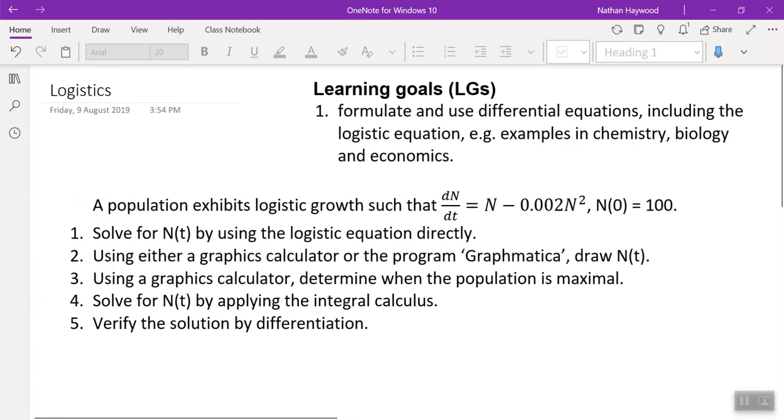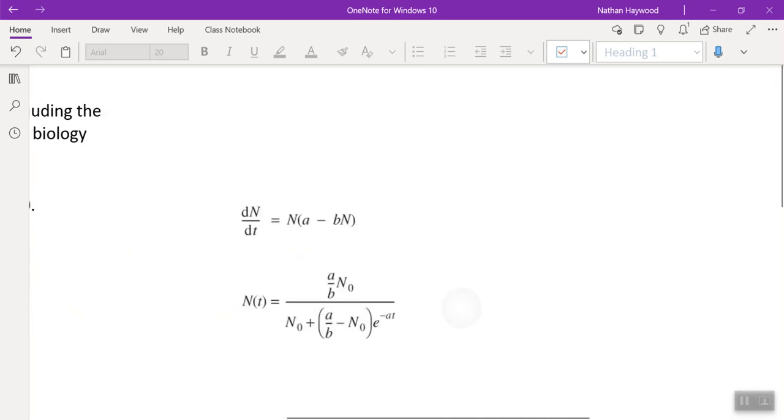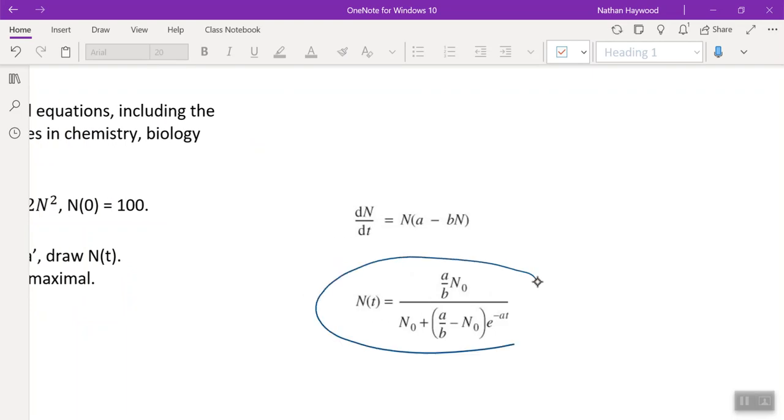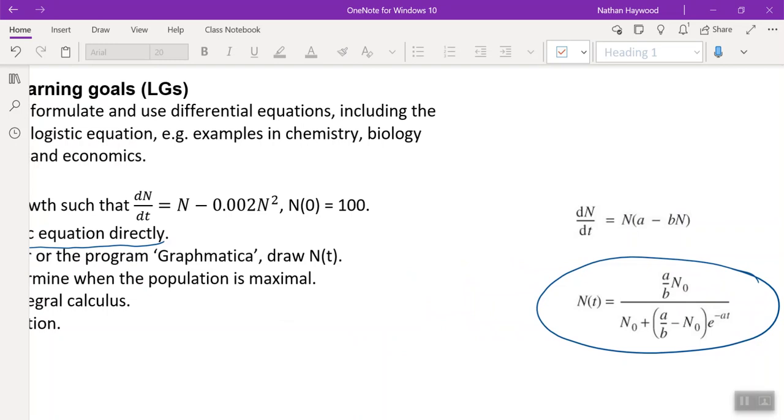Solve for N(t) using the logistics equation directly. So we can just take the equation and that will give us the population. What are our A and B values? There's our A and B values. So in this example, what's our A value? What's the number next to just regular N in the differential equation? So A is 1. What's our B value? Positive 0.002. Any questions so far?